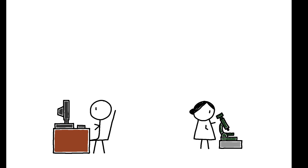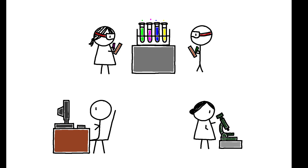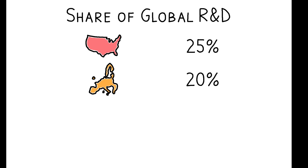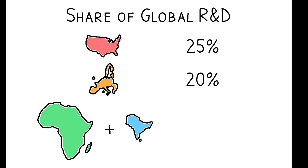Research and development drives technological progress, but is heavily concentrated in just a few high-income countries. The US alone accounts for 25% of global R&D, and the EU for another 20%, while Africa and South Asia combined account for less than 4%. Do these patterns lead to disparities in economic outcomes?